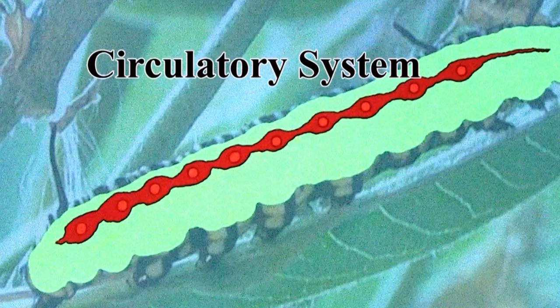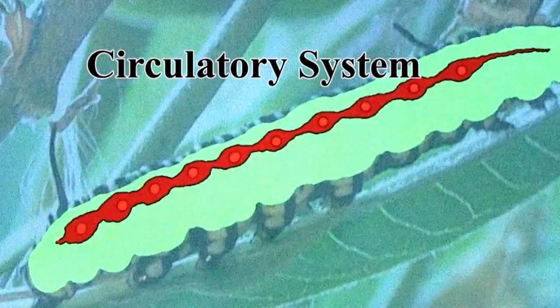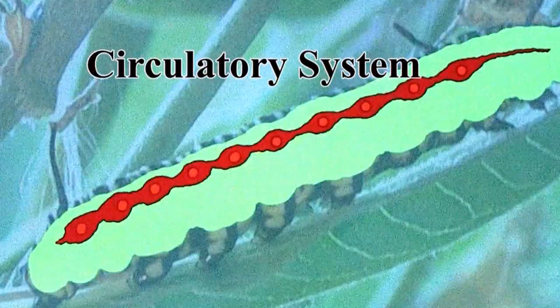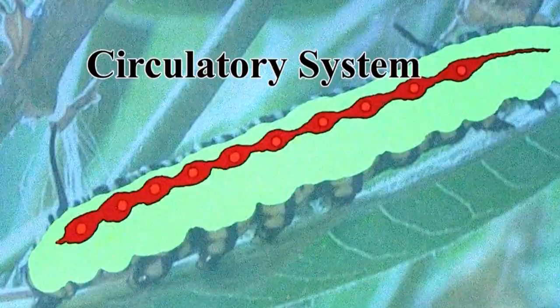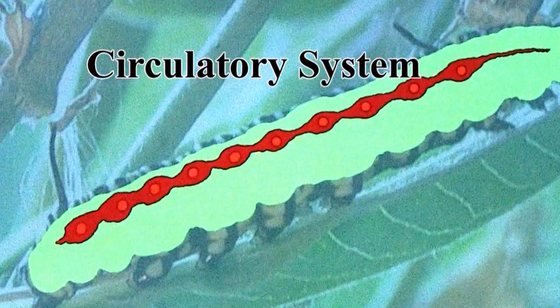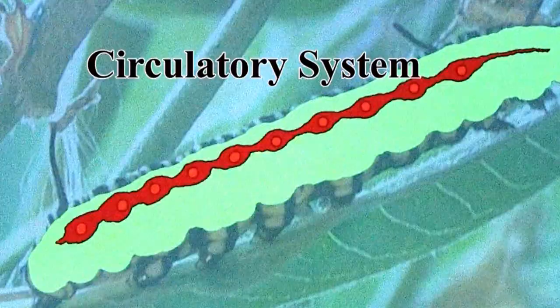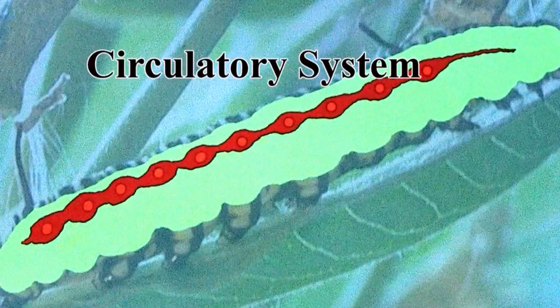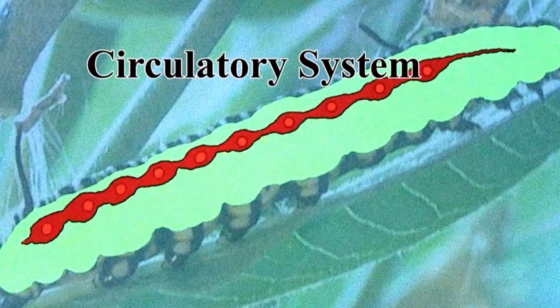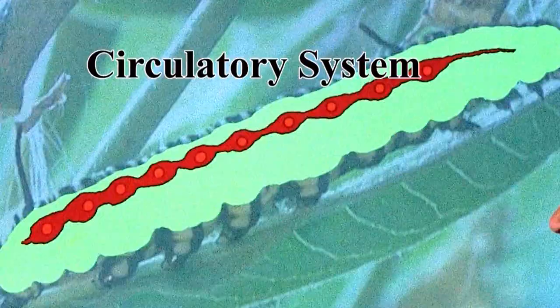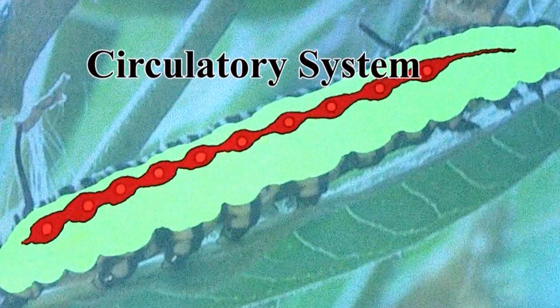This is the monarch caterpillar circulatory system, shown in red. Red is misleading because red typically denotes oxygen in the bloodstream, but there's no oxygen in monarch caterpillar blood — oxygenation is handled by another system. Blood here carries other functions like antibodies and hormones. Humans and other vertebrates have a closed circulatory system — a heart and tubes running throughout the body. Most invertebrates, except earthworms and their relatives, have an open blood system.